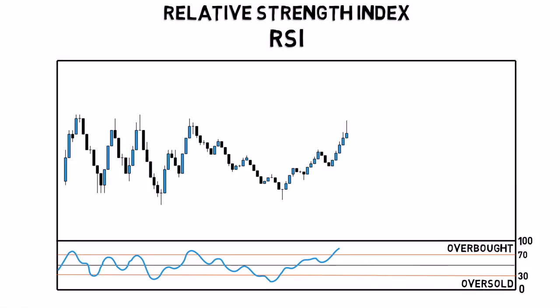The indicator also shows the current direction of the trend, with values above 50 indicating an uptrend and values below 50 a downtrend.